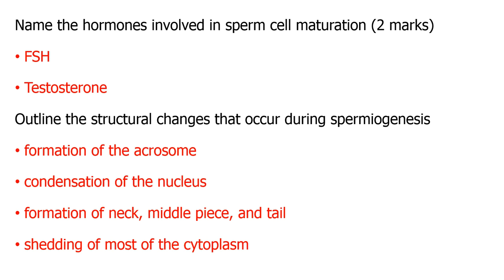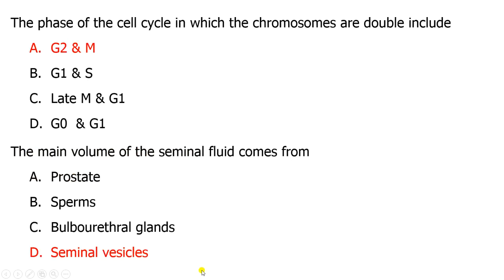The hormones involved in sperm cell maturation are follicle stimulating hormone and testosterone. The structural changes during spermatogenesis include: formation of the acrosome from the Golgi apparatus, condensation of the nucleus producing dense chromatin, formation of the neck, middle piece, and tail piece, and phagocytosis of the cytoplasm by Sertoli cells.